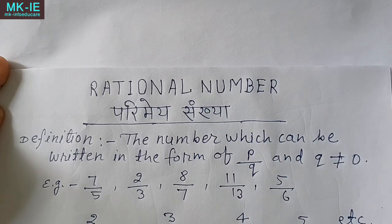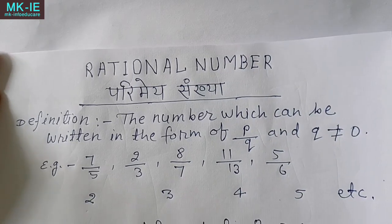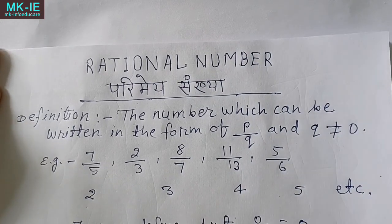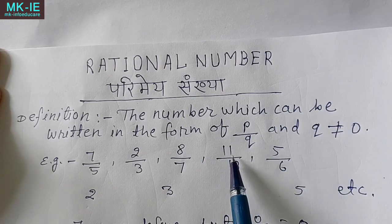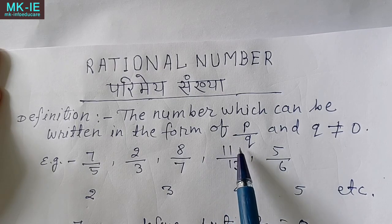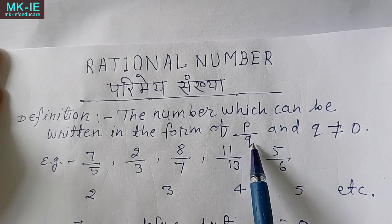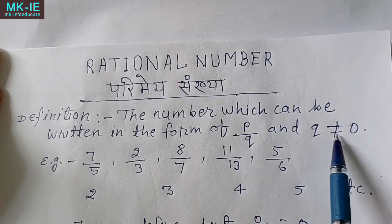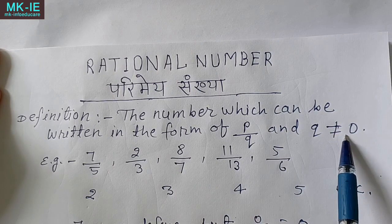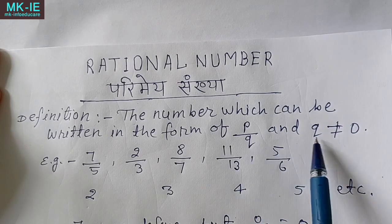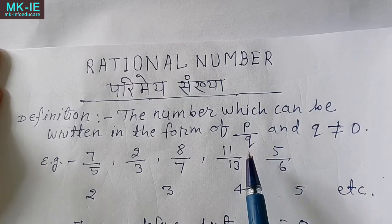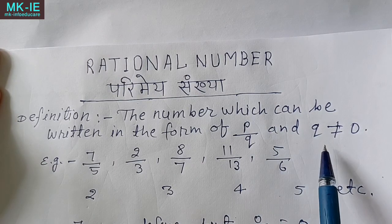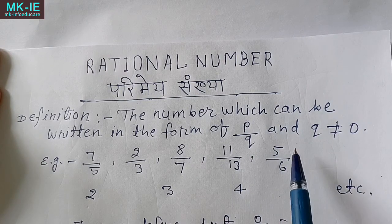अब एक और बात समझ लेते हैं। p और q कोई भी integers हो सकते हैं, लेकिन ध्यान रहे कि q not equal to 0 होना चाहिए। अगर q = 0 होगा तो वो rational number नहीं होगा, यानी denominator में 0 नहीं होना चाहिए।